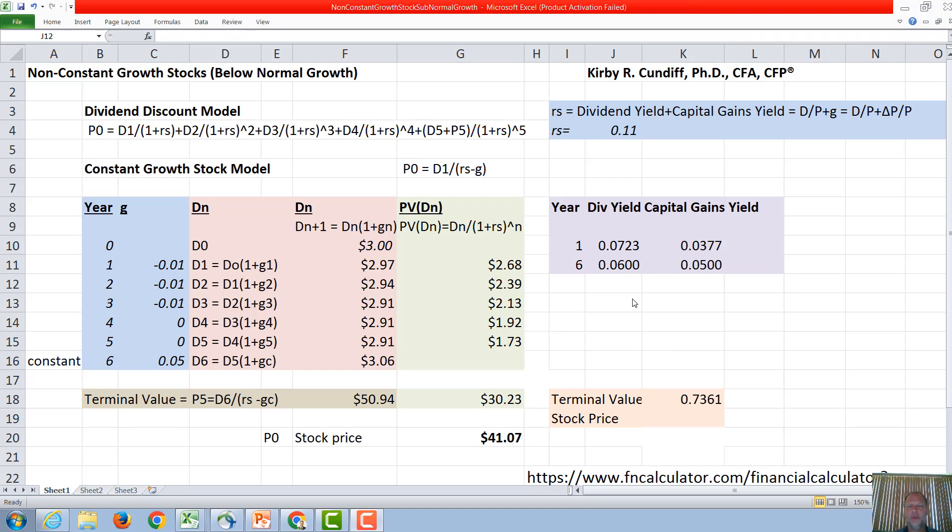It is also good to study what happens to the dividend yield and the capital gains yield as growth rate changes. We know that in the final year, the growth rate is going to equal the capital gains yield. This equation right here, the required rate of return equals dividend yield plus capital gains yield, will always equal the dividend next year over the current stock price. But the capital gains yield only becomes the growth rate when you have a constant growth stock. Before that, in general, it's just going to be the change in the stock price over the initial stock price.